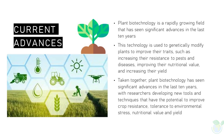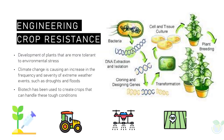One of the most significant advances in plant biotechnology in the last 10 years has been the development of CRISPR-Cas technology. CRISPR-Cas is a powerful gene editing tool that allows scientists to precisely target and modify specific genes in plants, and it has been a game changer in the field.